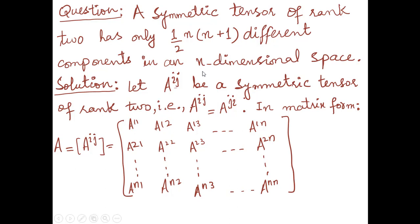Let aij be a symmetric tensor. We suppose this is a symmetric tensor, and we want to find the number of independent, different components. Since it is a symmetric tensor, it satisfies the property that aij equals aji. We can write this tensor in matrix form.